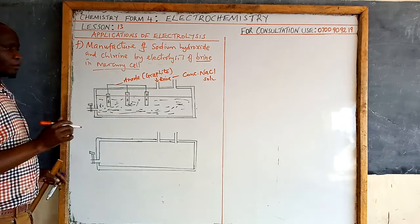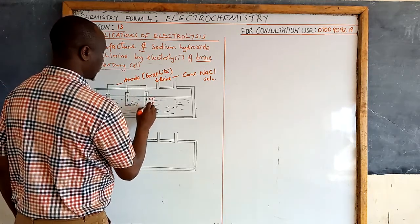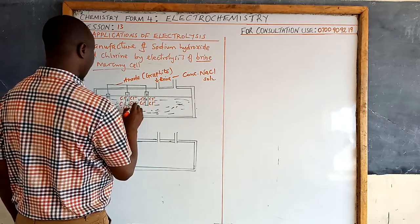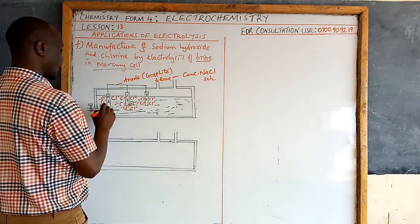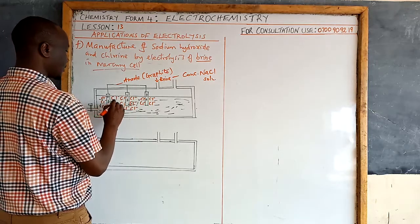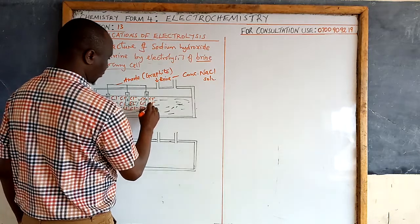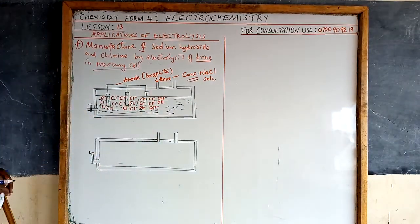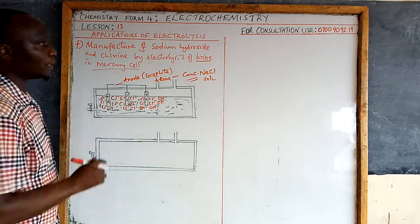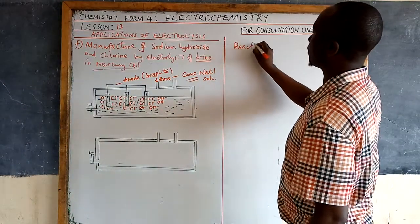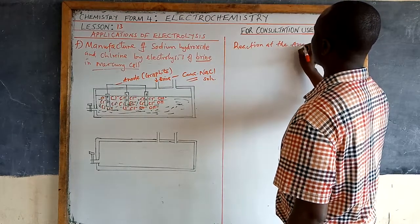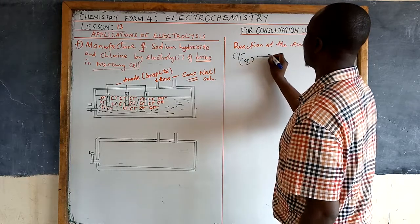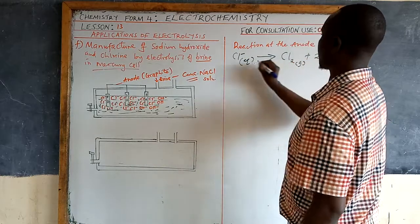When the circuit is complete, chloride ions are attracted to the positive electrode (anode). The solution contains both chloride ions and hydroxide ions as anions. However, because of the high concentration of chloride ions — based on the factors affecting preferential discharge discussed in earlier lessons — chloride ions are preferentially discharged. The reaction at the anode: chloride ions from solution lose electrons, forming chlorine gas: 2Cl⁻ → Cl₂ + 2e⁻.